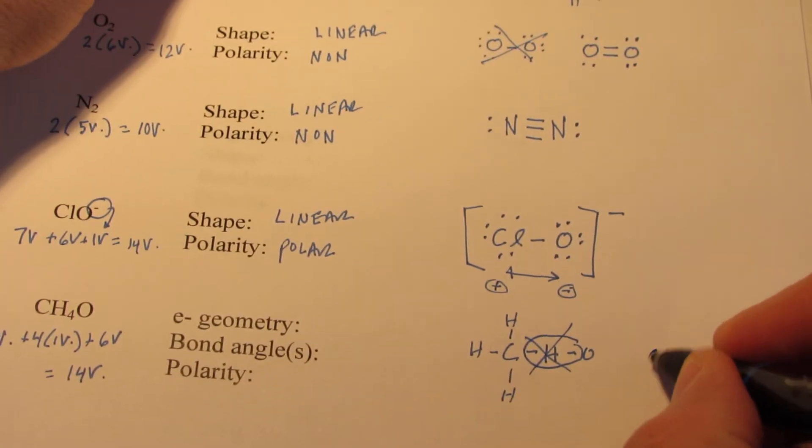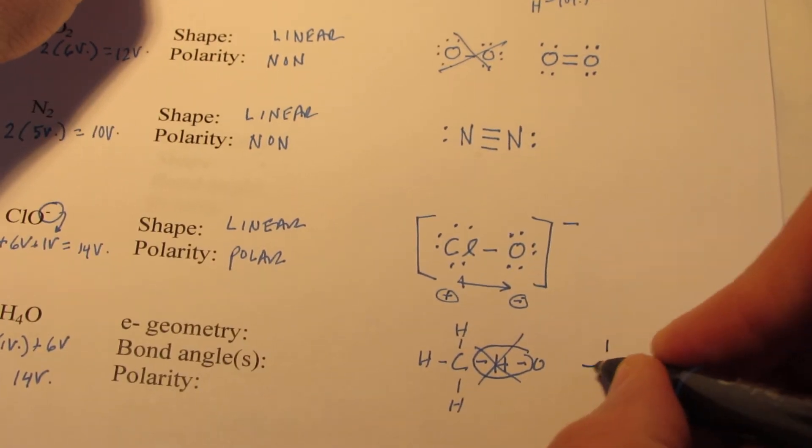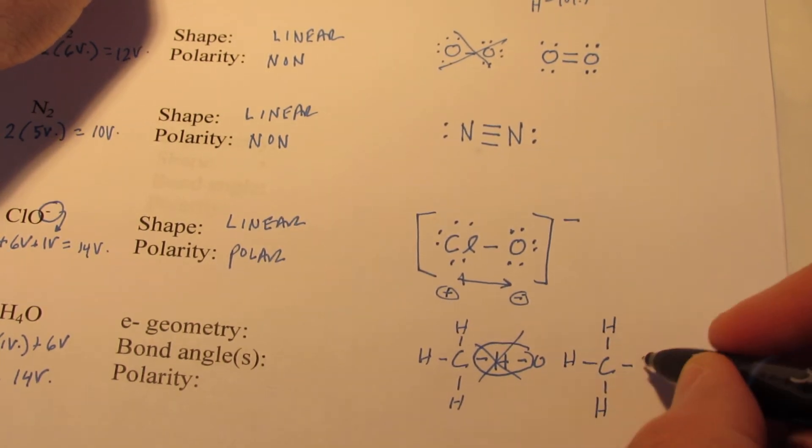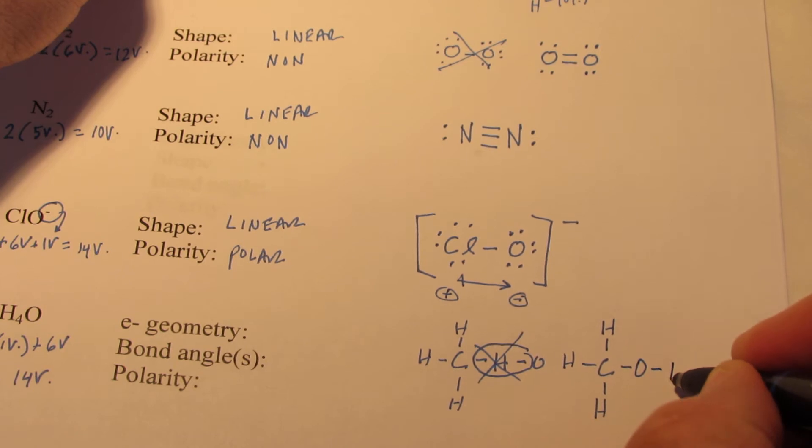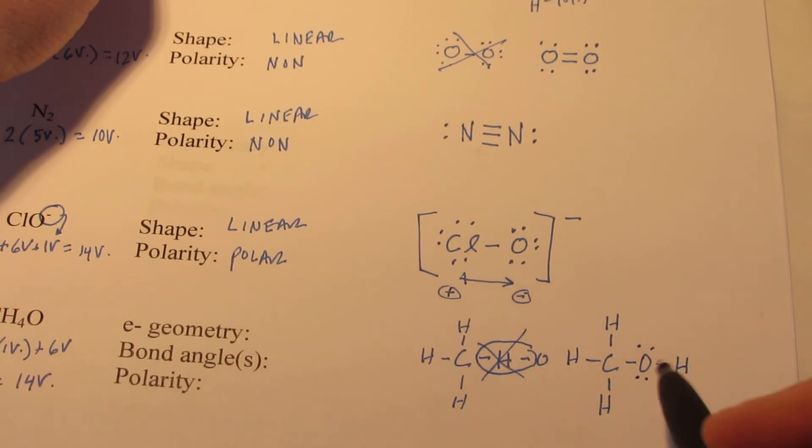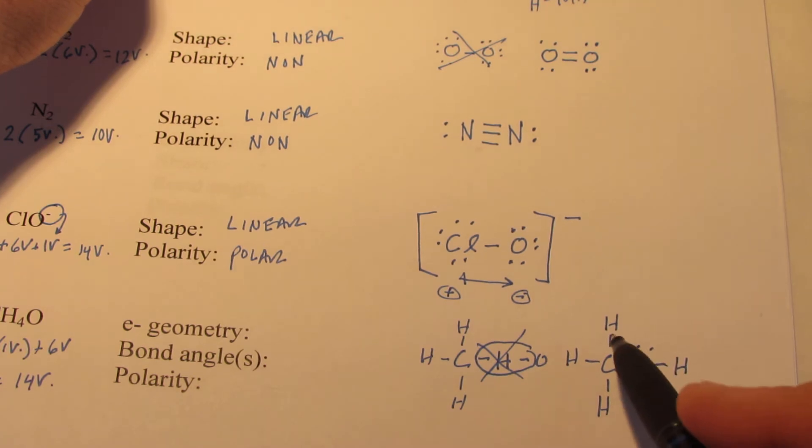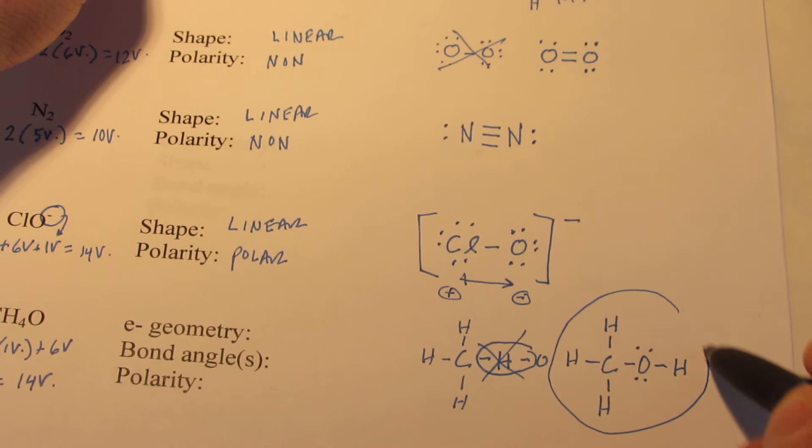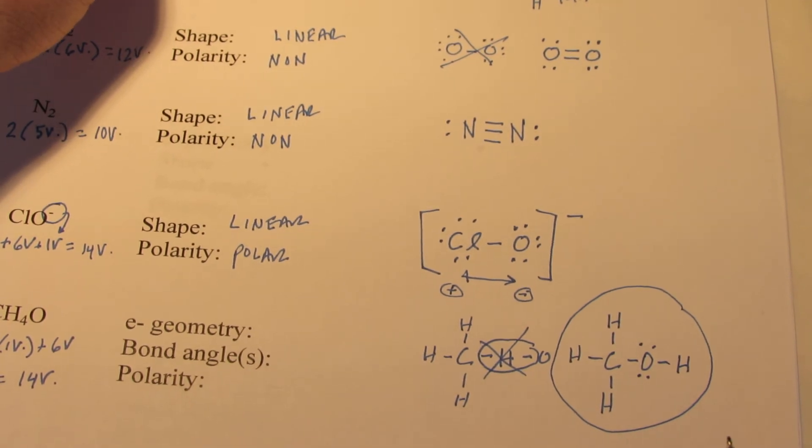But perhaps we could try something like this. We'll put 3 hydrogens here, and then we'll put the oxygen before that hydrogen. Give that oxygen a full octet. We've used 2, 4, 6, 8, 10, 12, 14. That's just what we're allowed, and that is a valid Lewis structure for CH₄O.